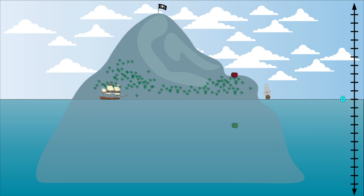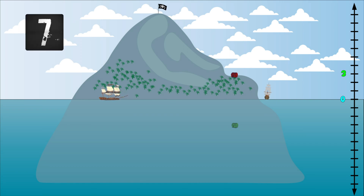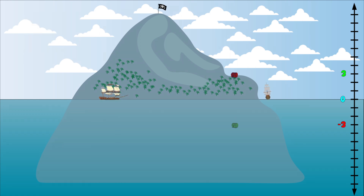The red treasure box is located at three units above sea level. Can you guess what number is its opposite? If you guessed negative three, you are correct. Negative three is the opposite of positive three. Both three and negative three are three units away from zero.